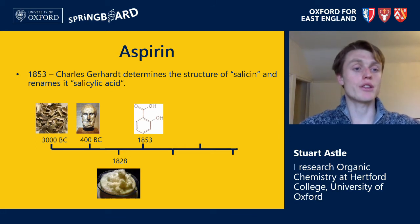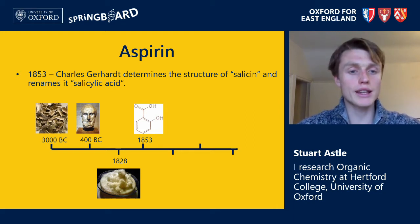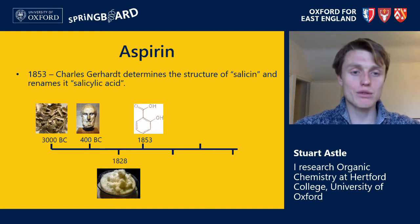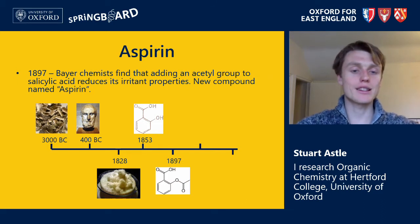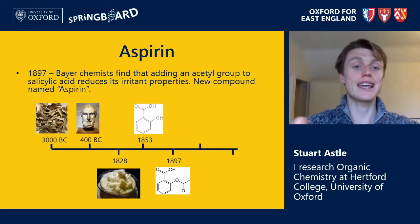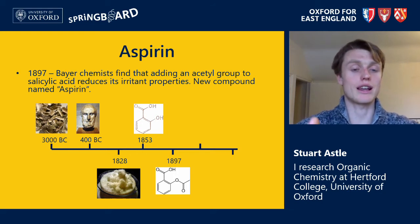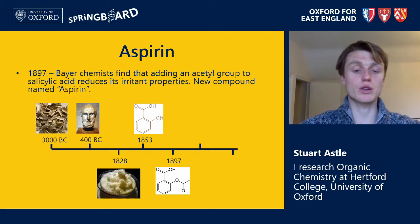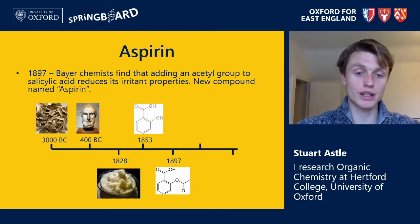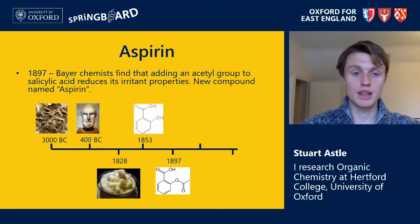Several years after Buchner's discovery, another chemist called Charles Gerhardt was able to determine the chemical structure of the active compound and renamed it salicylic acid. If you look at the structure closely you can see why it's called an acid — we have a carboxylic acid group at the top of the molecule. Moving on to 1897, chemists at Bayer, a German chemical company, found that by adding an acetyl group to salicylic acid they could reduce its irritant side effects. Salicylic acid had an active pain-relieving effect, but an unfortunate side effect was that it could cause stomach ulcers. By adding the acetyl group on the right-hand side of the molecule, the chemists reduced this irritant property, and they renamed this new compound aspirin and started selling it.